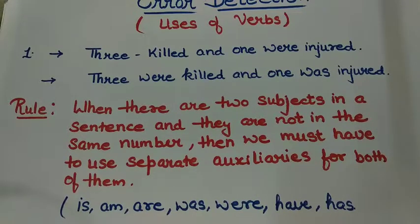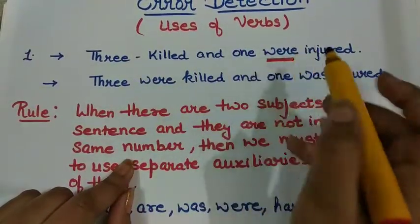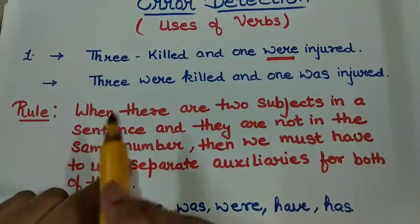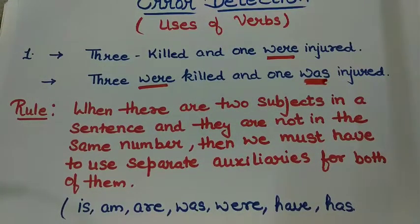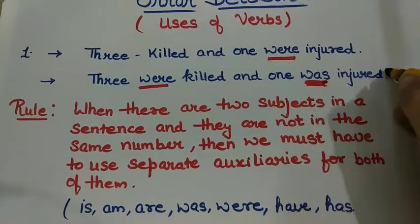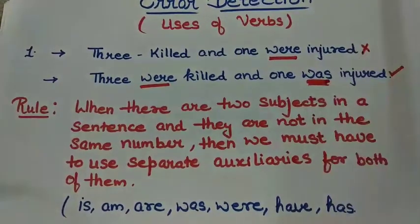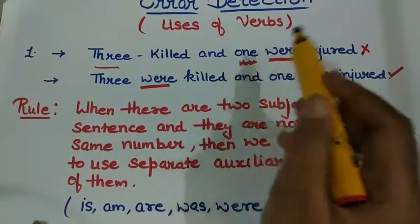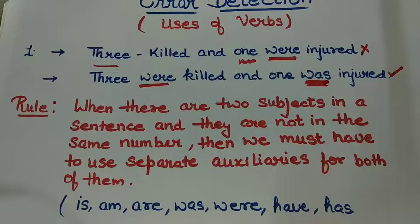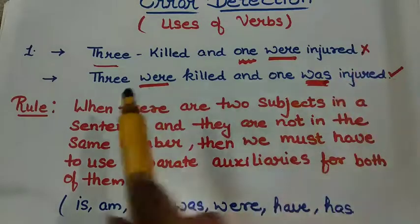The next sentence says: 'Three were killed and one was injured.' Here I have used 'were' with 'one' in the first sentence, but in the second I have used 'three were killed' and 'one was injured.' Can you see the verbs — 'were' and 'was'? The second sentence is the correct one and the first is wrong. According to the rule, when there are two subjects in a sentence and they are not in the same number — here 'three' and 'one' — they are not the same in number, so we must use separate auxiliaries for both, as done in the second sentence.